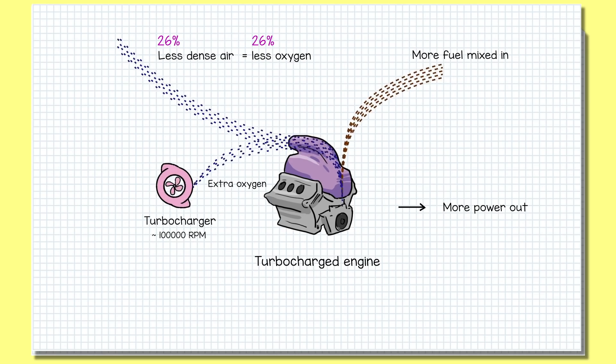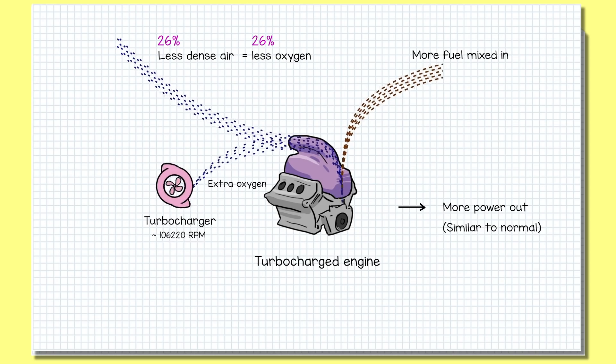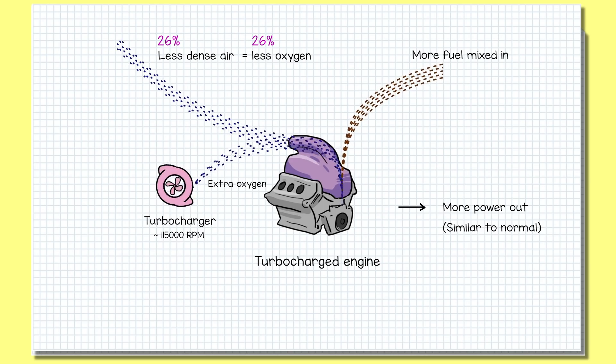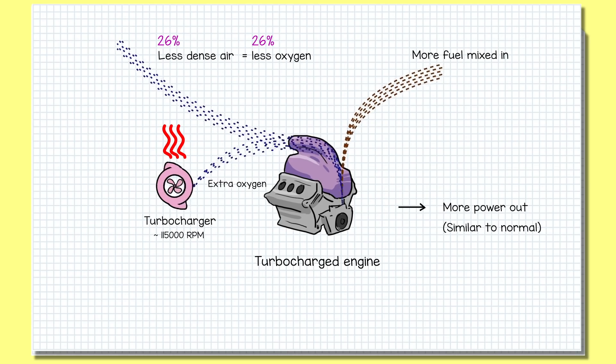So actually, the overall power hasn't dropped too much. But the turbo is having to work about 10 to 15% faster, going from around 100,000 rpm to about 110,000-115,000 rpm. And that puts a lot of stress on the turbo. And it adds a lot of heat, which is bad, partly for reliability and partly because the turbos want to pump air as coolly as possible into the engine.